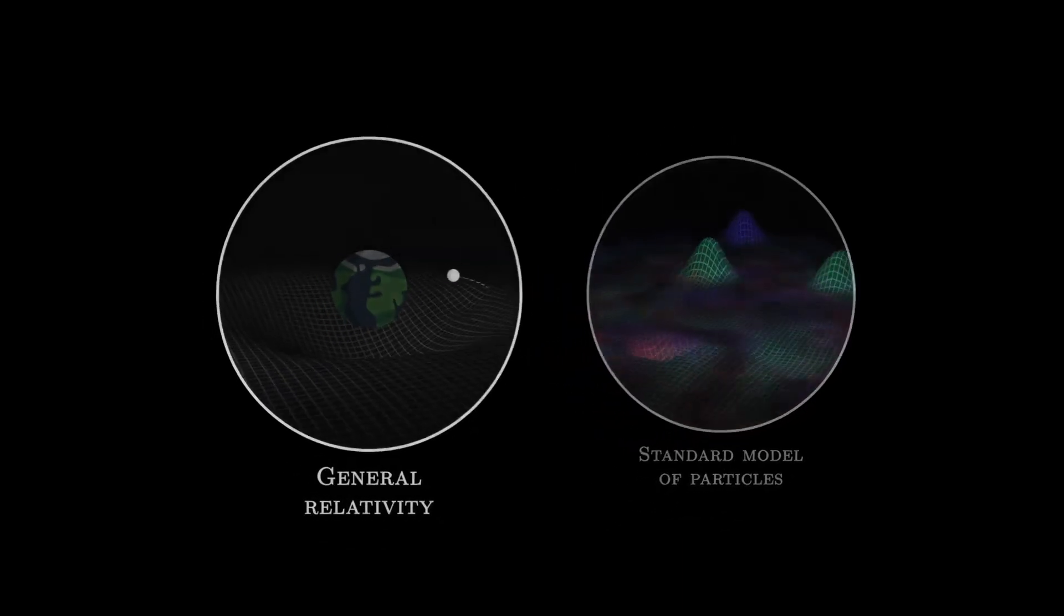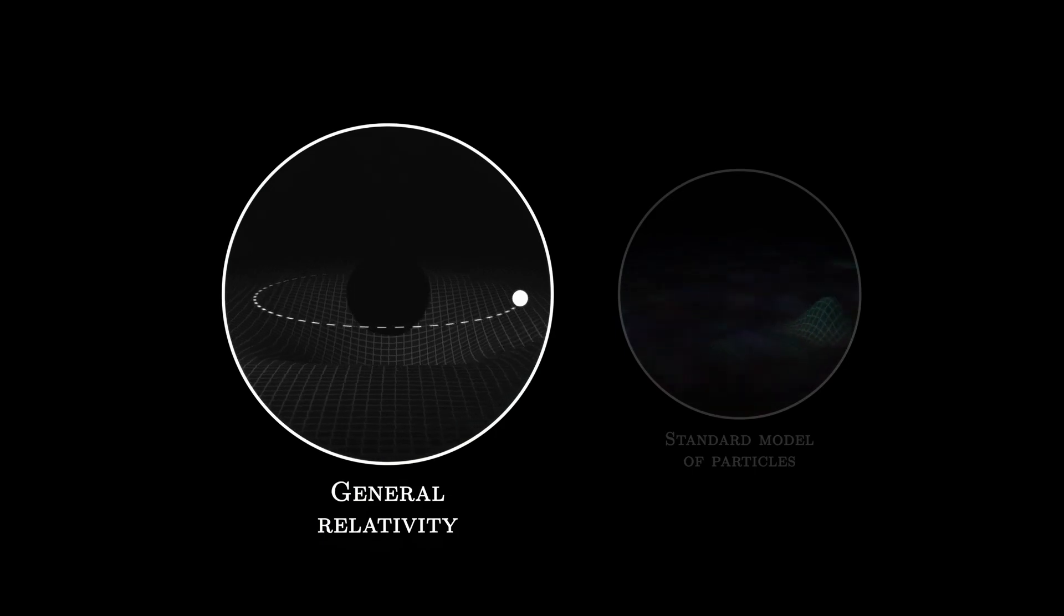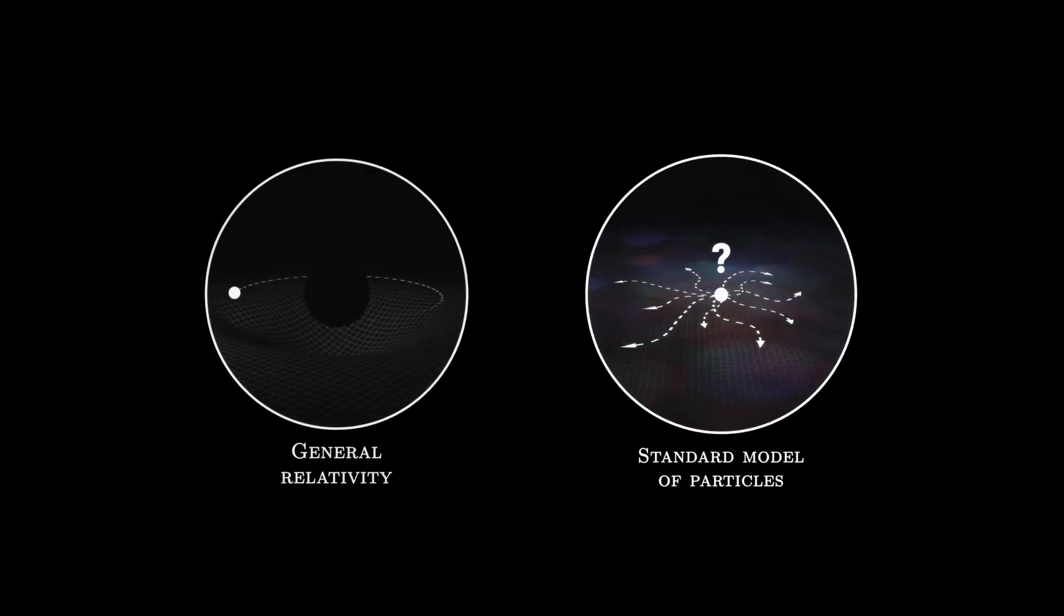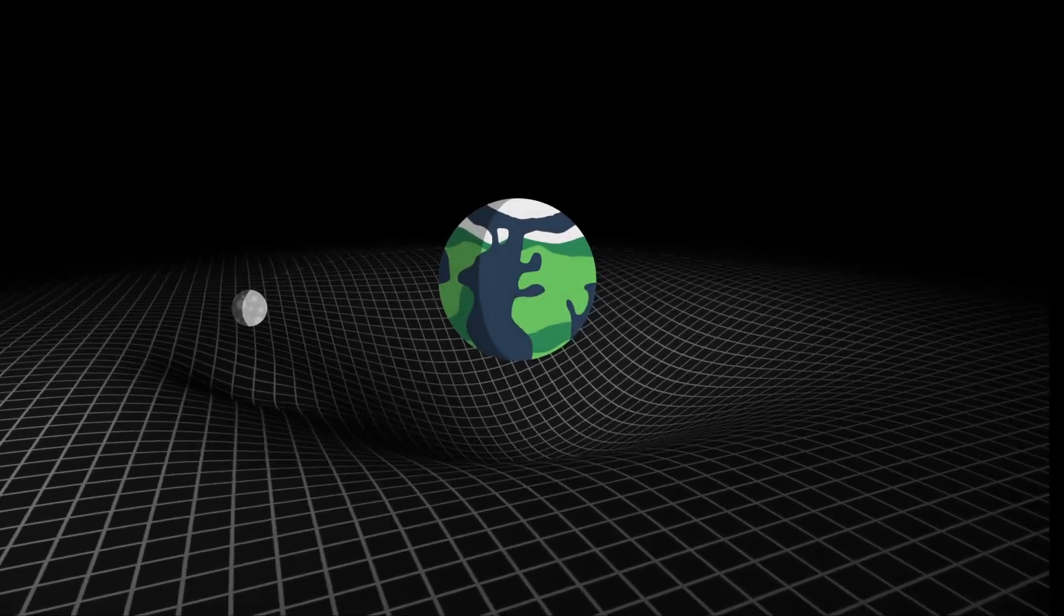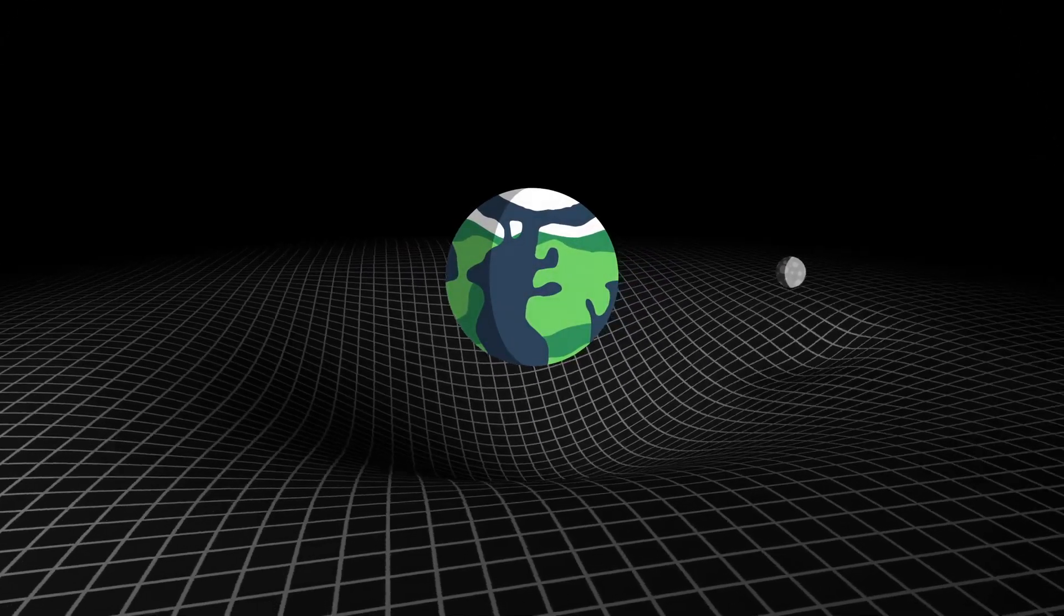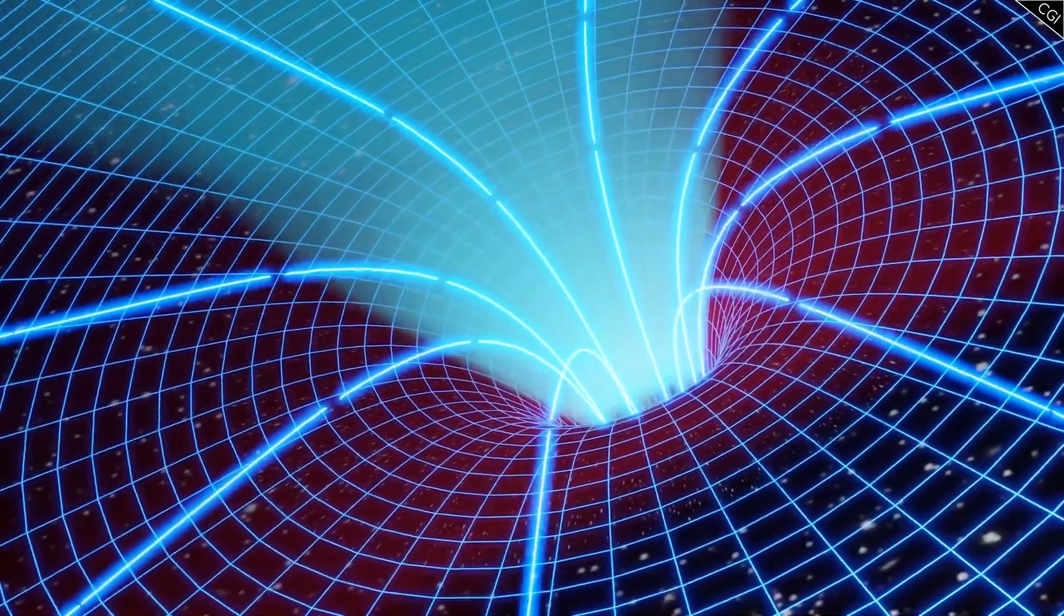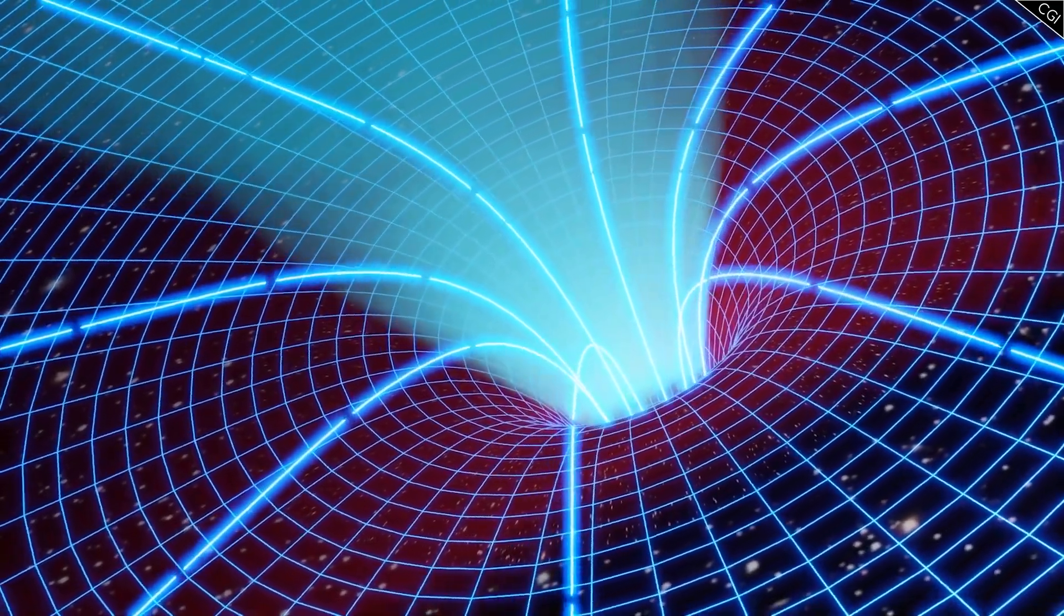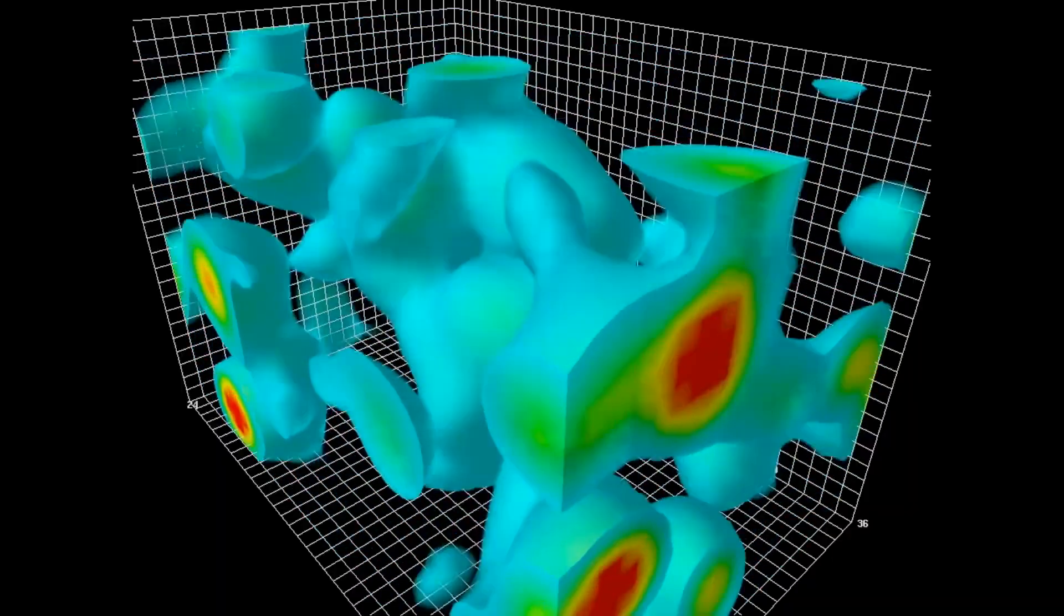Einstein's cosmological constant: a form of energy inherent to space itself. It represents what remains if you remove all the matter, antimatter, radiation, and any other quanta from the universe. Empty space still has energy, and the cosmological constant, which we measure to be positive, quantifies it. It may be over 100 orders of magnitude—a factor of 10^100—smaller than the energy density present during inflation, but it still exists.